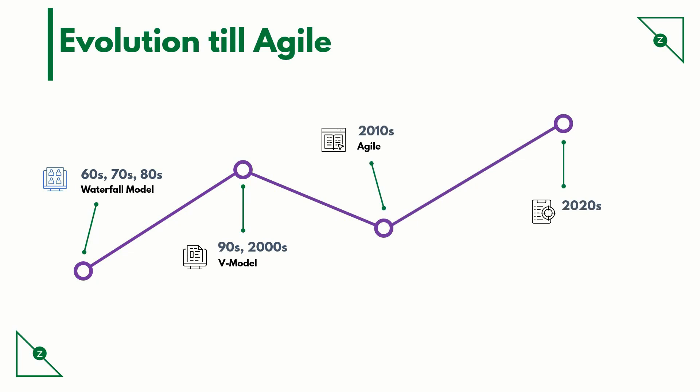Now in the 2020s, we are looking at more matured, mutated forms of Agile. Scaled Agile and DevOps have gained popularity. But who will win?